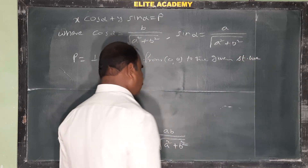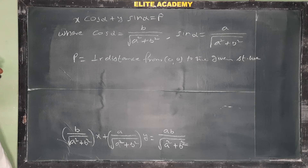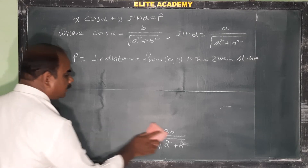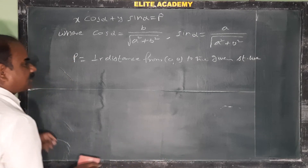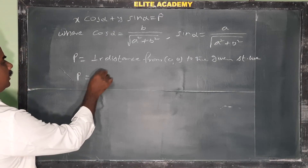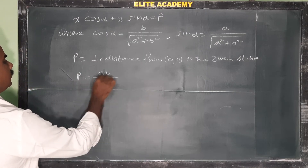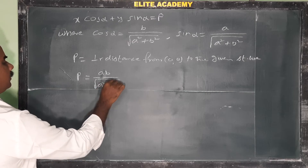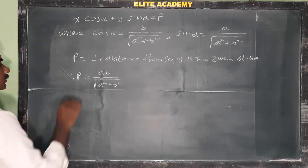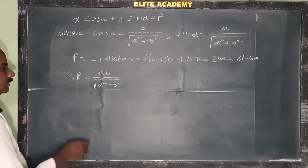Here p represents the perpendicular distance from the origin to the given straight line. That value is p = ab/√(a²+b²).